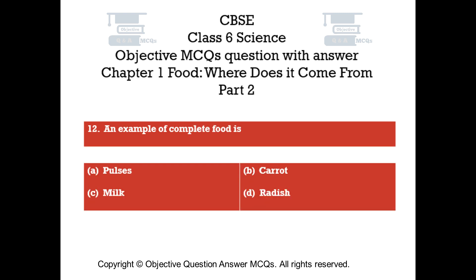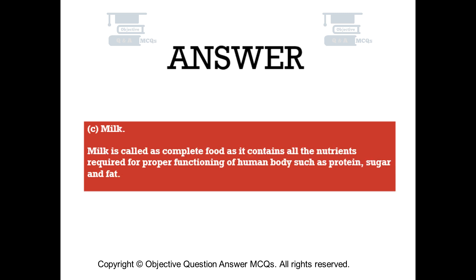Question number 12. An example of complete food is: Option A: Pulses. Option B: Carrot. Option C: Milk. Option D: Radish. The right answer is Option C. Milk is called a complete food as it contains all the nutrients required for proper functioning of the human body, such as protein, sugar, and fat.